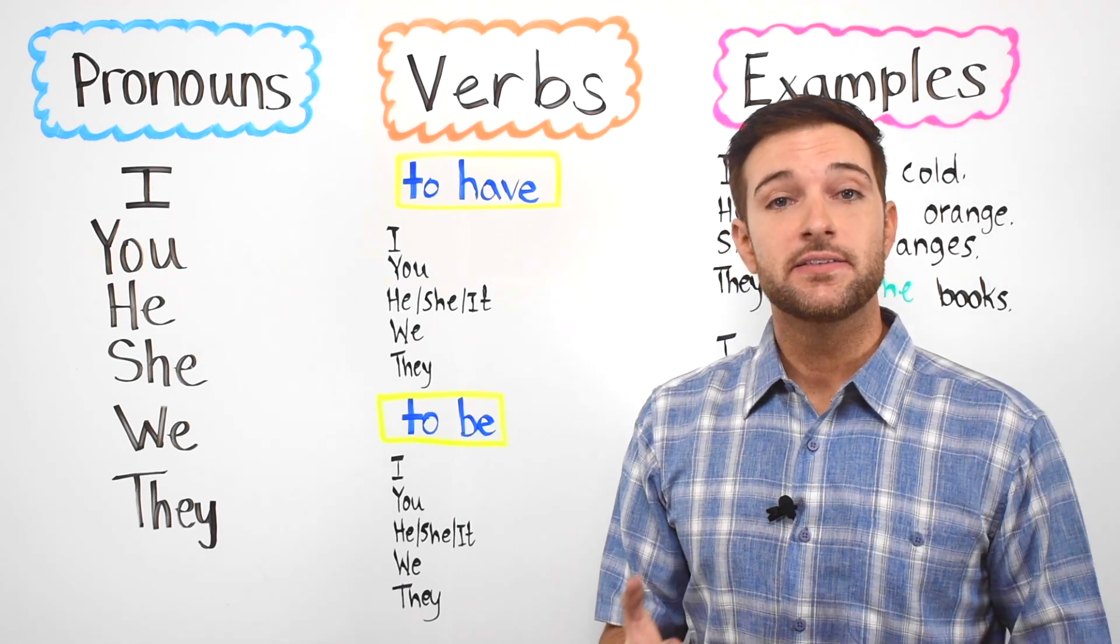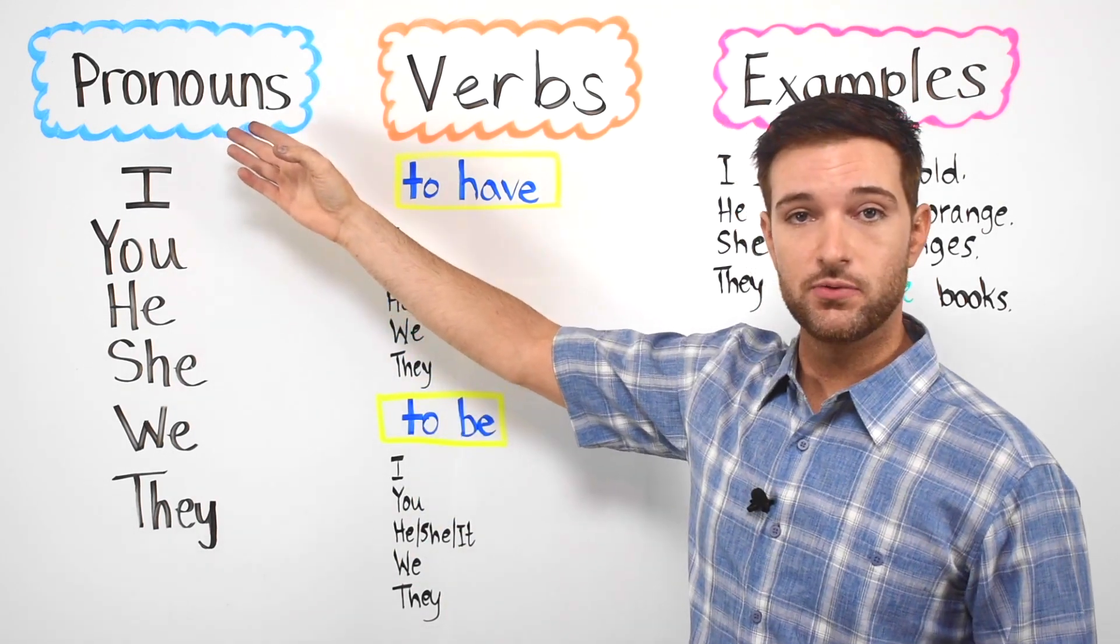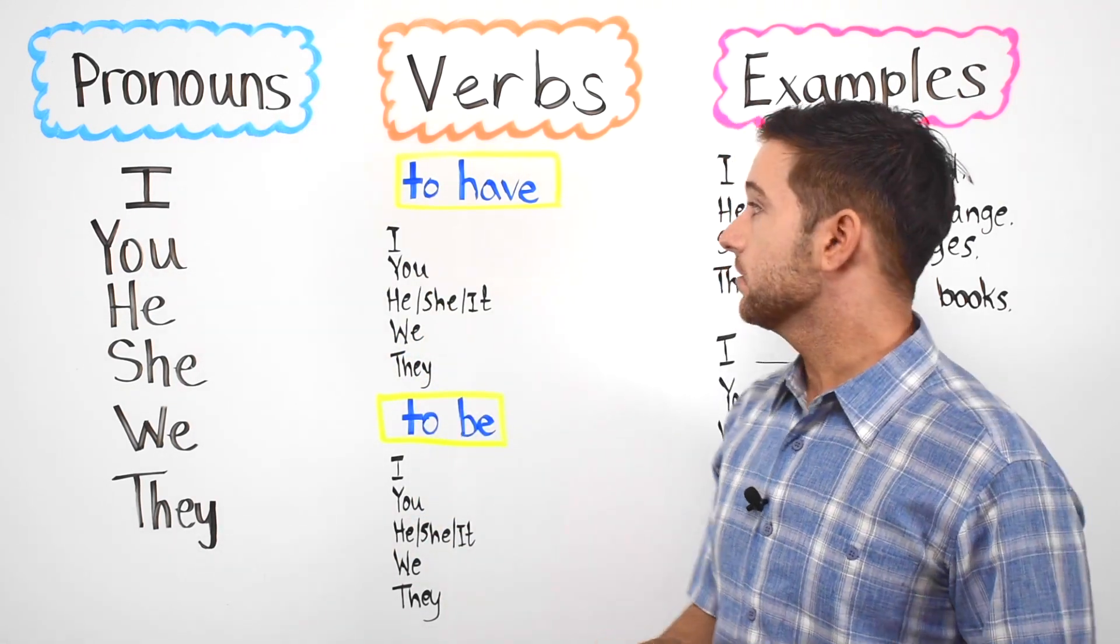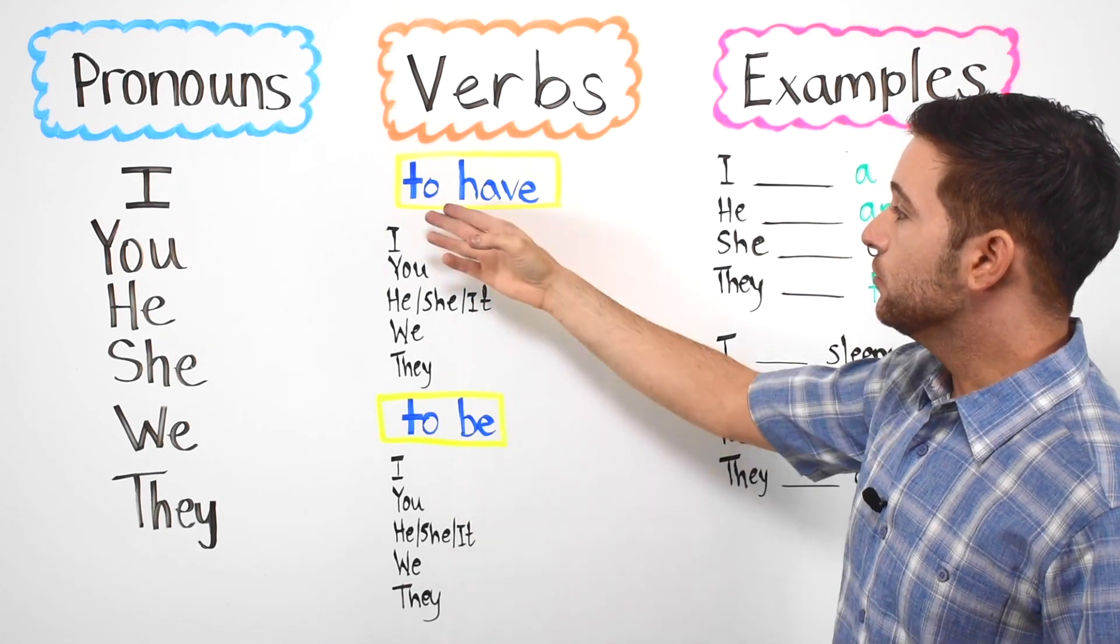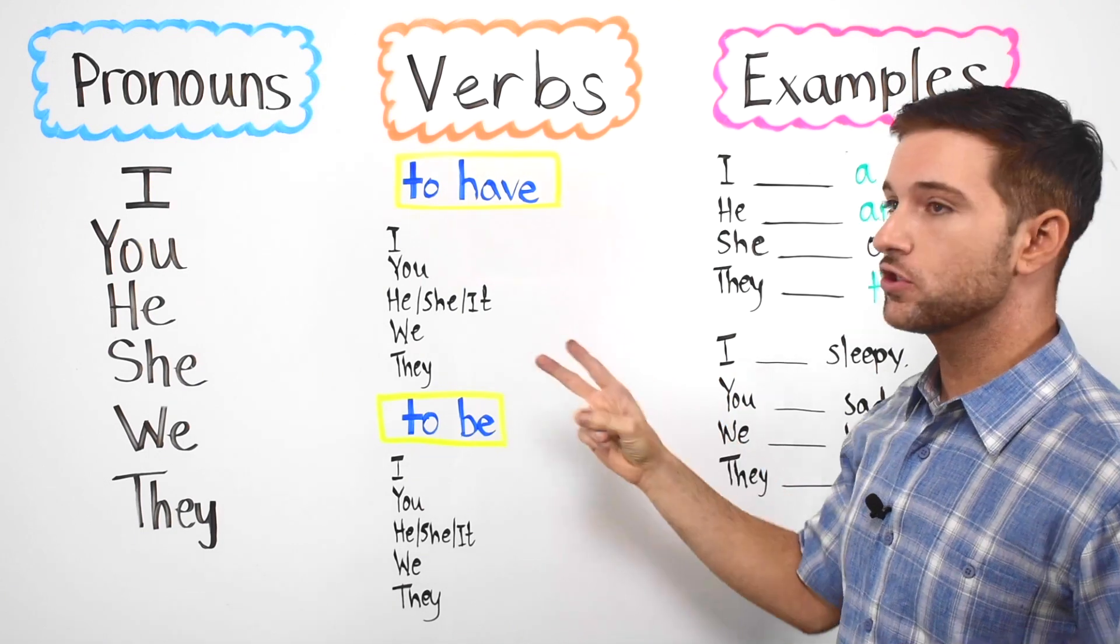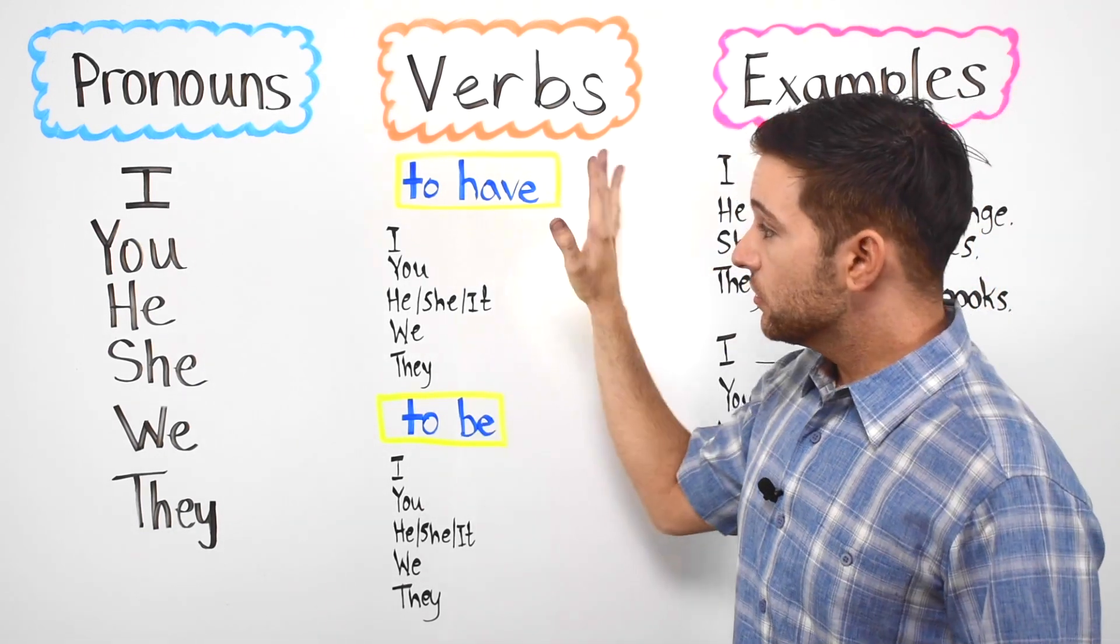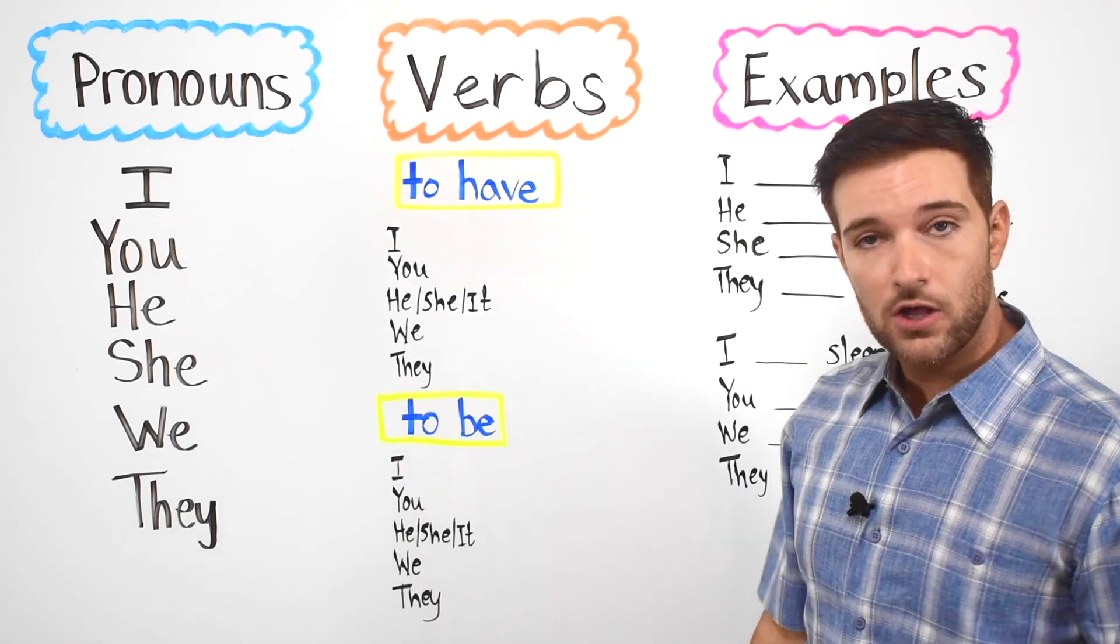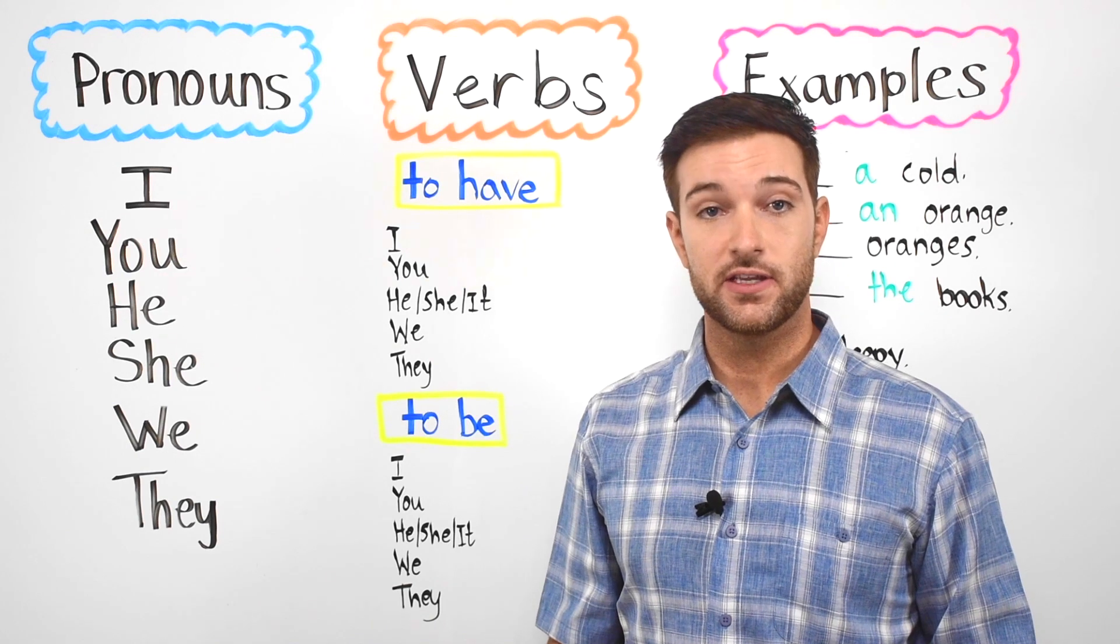So guys, today we are going to learn about pronouns in the English language. In addition to that, we're also going to take a look at the verbs to have and to be. To have and to be are the two most commonly used verbs in the English language. In addition to all of this, we're also going to take a look at some new nouns and adjectives in the English language as well.